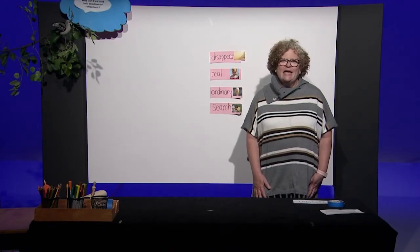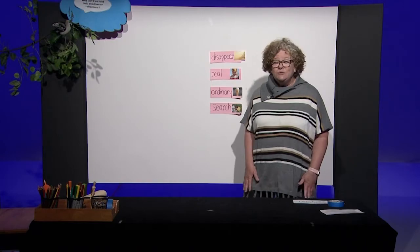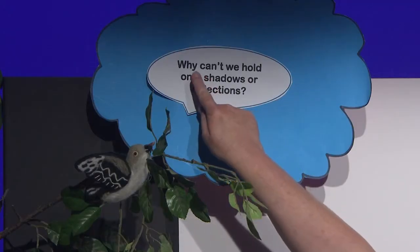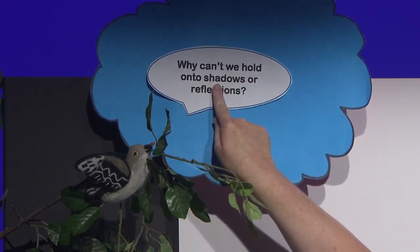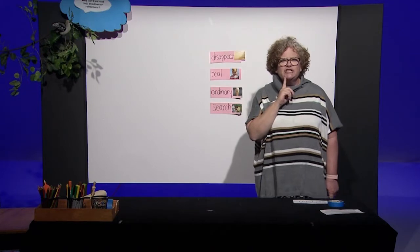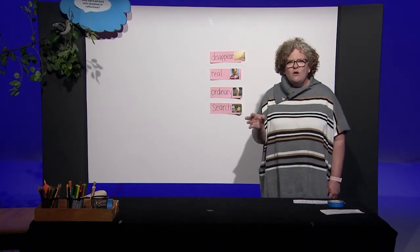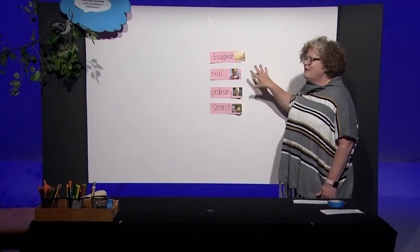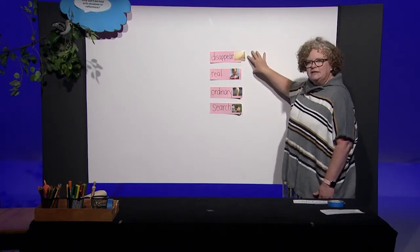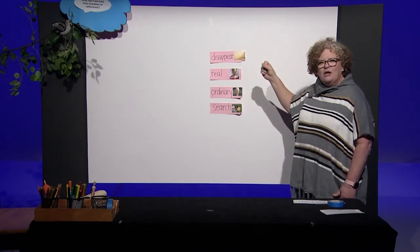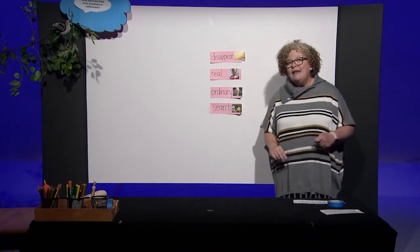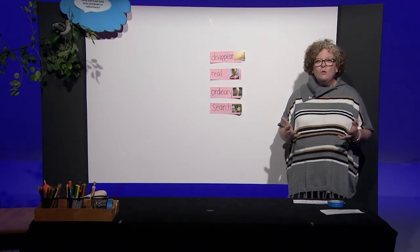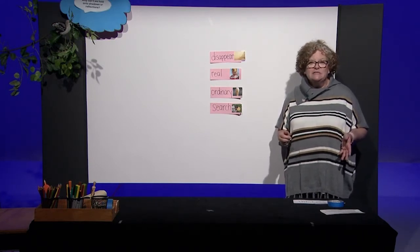I wonder what we're going to do today. Let's go visit the Mockingbird and see what he has tweeted us today. Why can't we hold onto shadows or reflections? Have you ever seen your shadow and tried to catch it? I see my shadow on the white wall and I go try to catch it, but I can't hold it in my hand because it's light that's reflecting. I'm going to invite my friend Candace up here and we're going to talk about our vocabulary words and learn more about why we can't hold on to shadows or reflections.